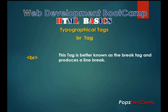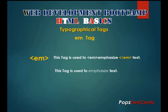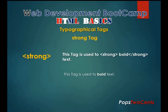The br tag, better known as the break tag, produces a line break. The hr tag produces a horizontal rule across the page. Later on in the course you'll find how to style the hr tag. The em tag is used to emphasize text. The strong tag is the bold tag, used to bold text as seen in the example. You may also use the b tag.